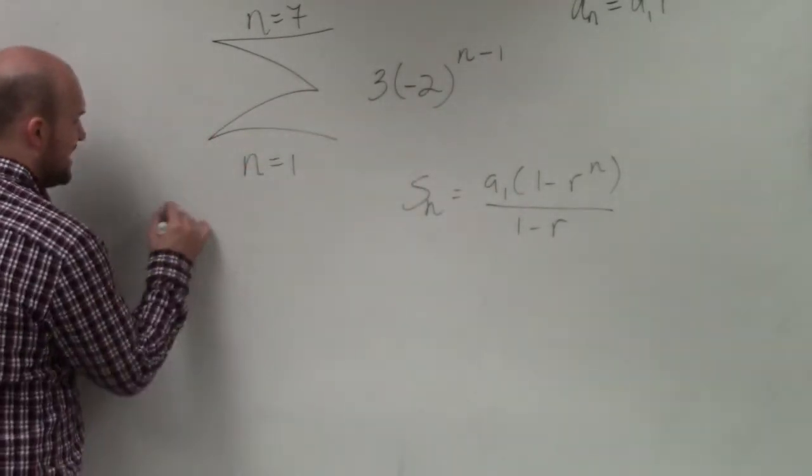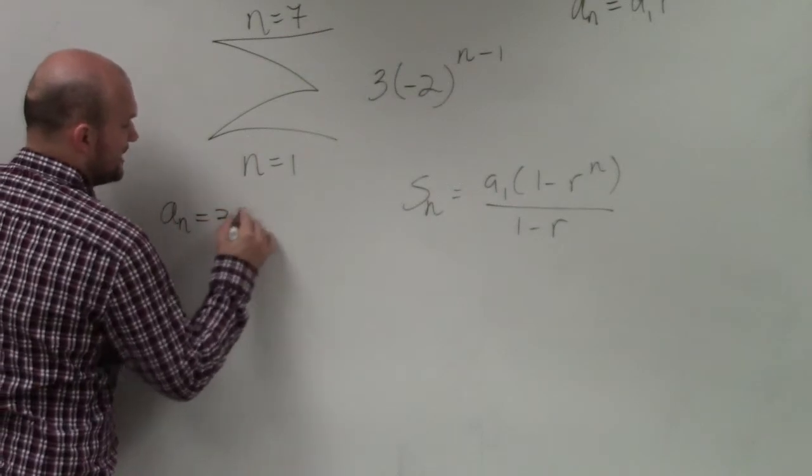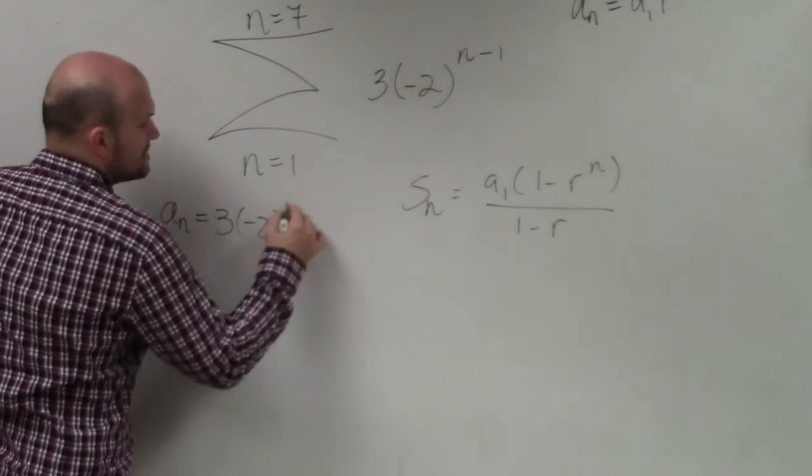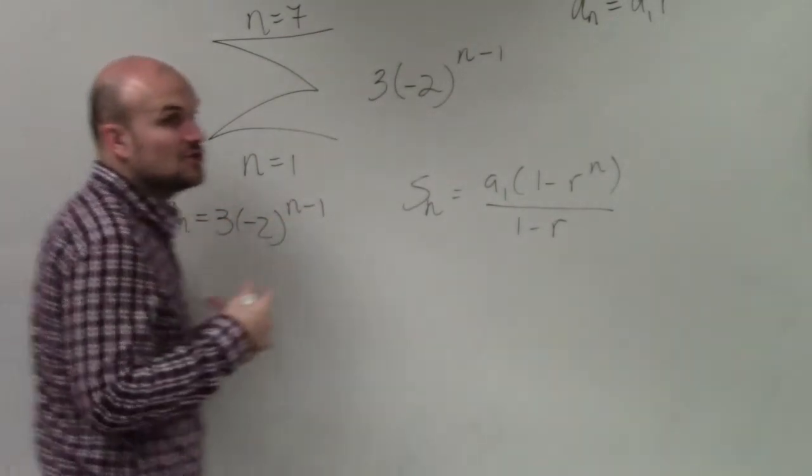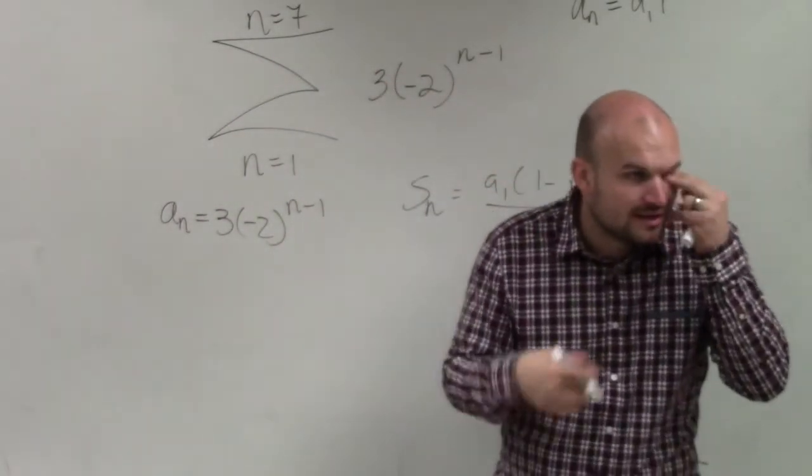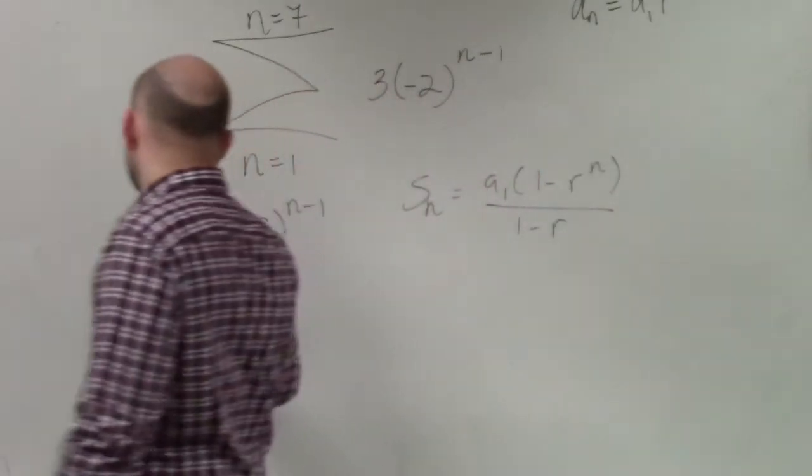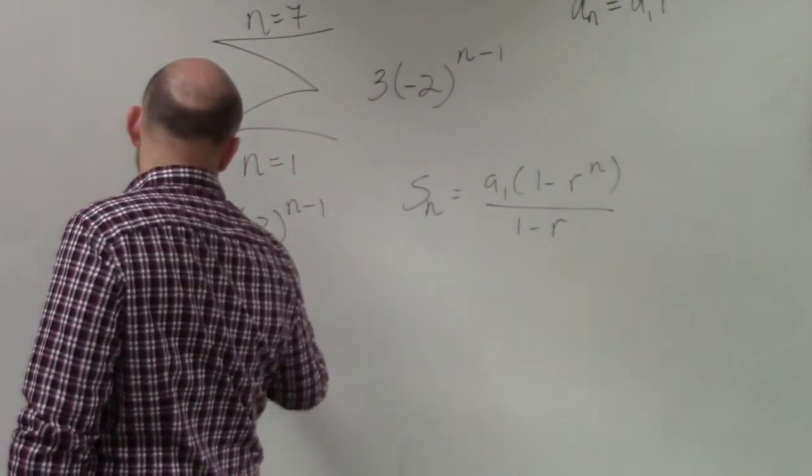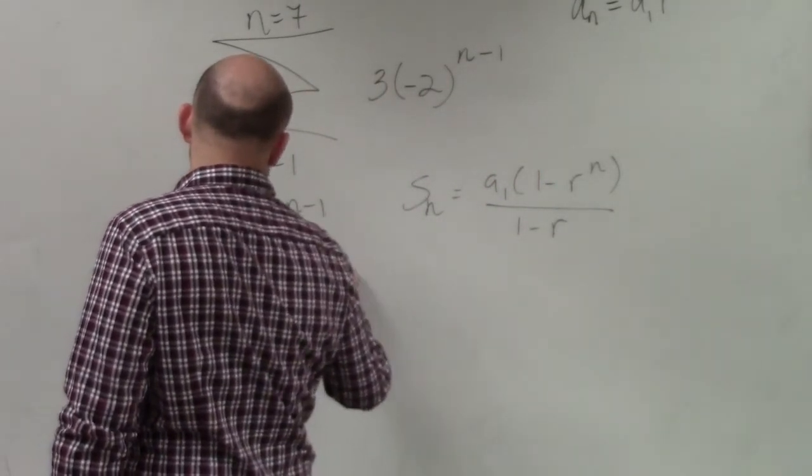That's the rule. So you say a sub n equals 3 times negative 2 to the n minus 1. So if I want to find the first term, what do I do? Plug one in for n. So you do a sub 1 equals 3 times negative 2 to the 1 minus 1.